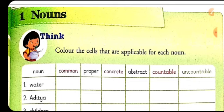So children, you know what a noun is? A noun is the name of a person, place, animal or thing.